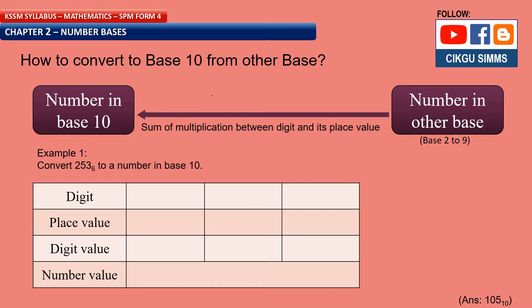The method is to find the number value — it's the same as finding a number value. It's a sum of multiplications between the digits and their place values. For example, convert 253 in base 6 to base 10.